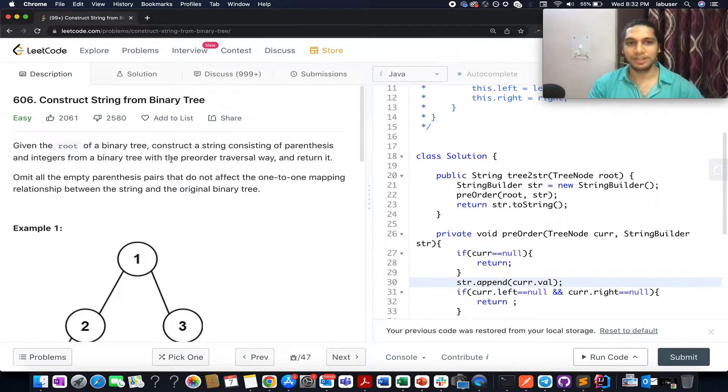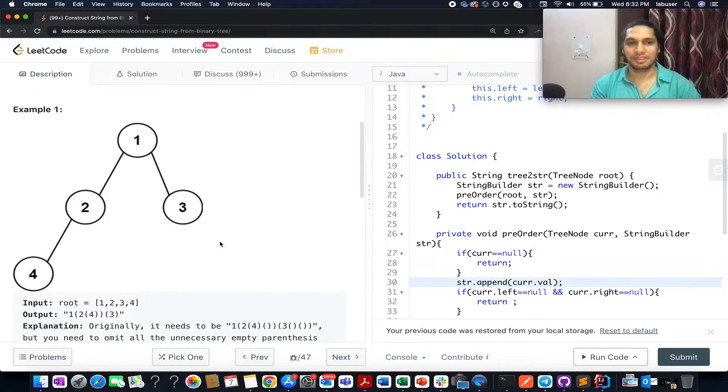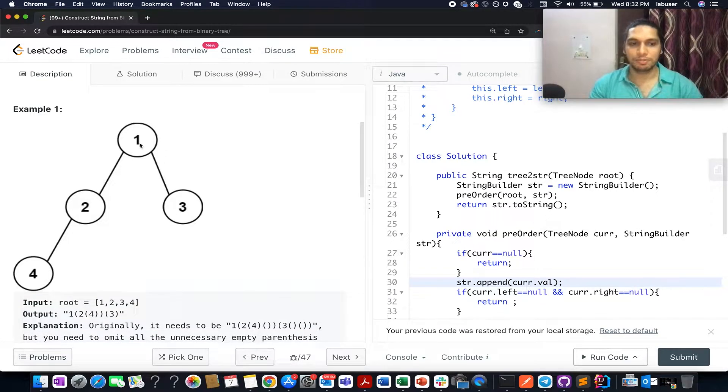The question that we have today is Construct String from Binary Tree. In this question we are given a binary tree and we need to create one string containing parenthesis and integer values from the binary tree such that the elements are traversed in pre-order fashion.